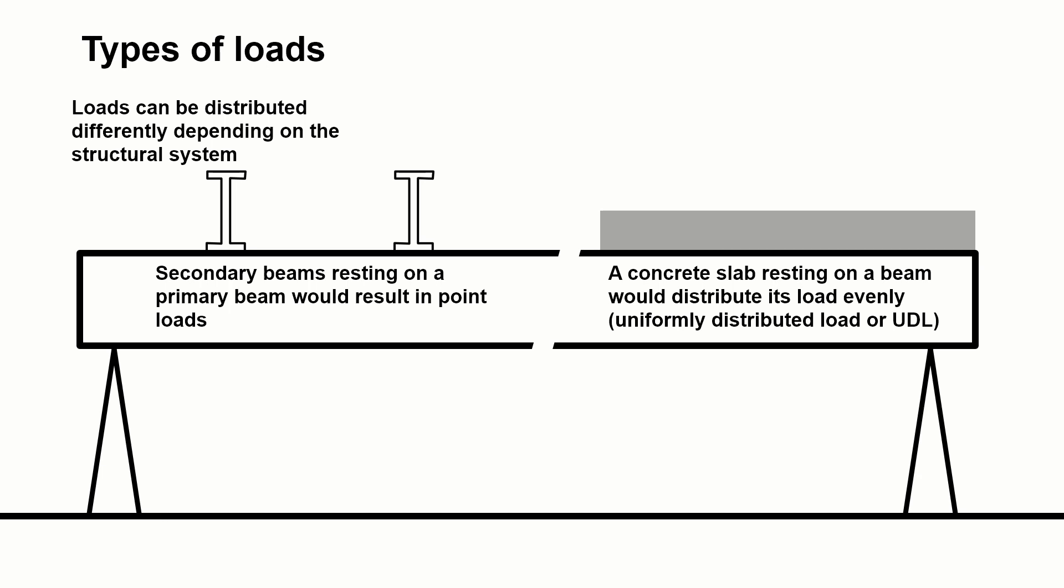We also have to think about how the loads are distributed on a beam or within a structural system. If we have a primary beam, like in the last example, resting between the two triangular things, and we put other beams to sit on top of them, the loads carried by those other beams would hit that main beam at a point. We'd refer to those as point loads.